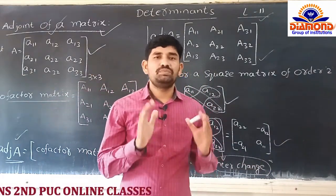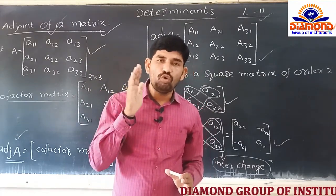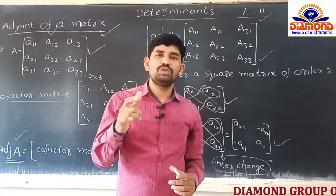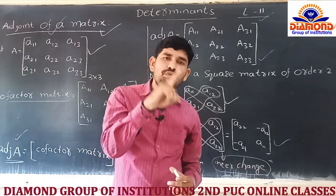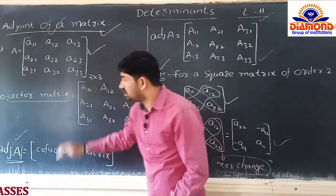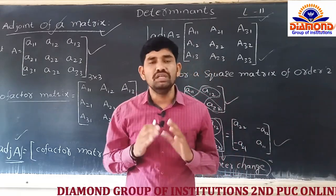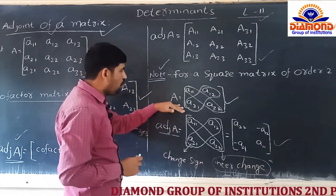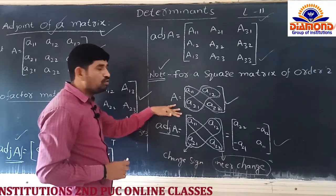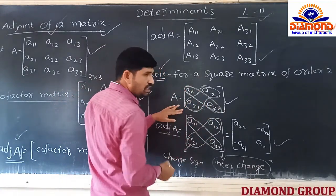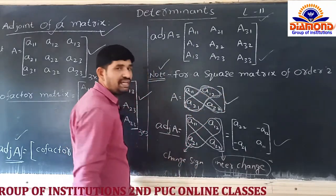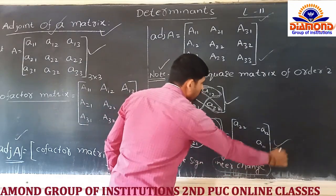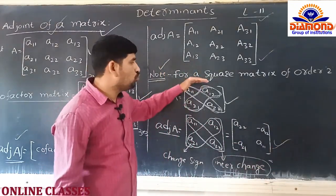To recall: for a 3x3 matrix, find cofactors of each element, form the cofactor matrix, take its transpose to get the adjoint. For a 2x2 matrix, interchange the two diagonal elements and change the sign of the other two off-diagonal elements. That gives the adjoint.